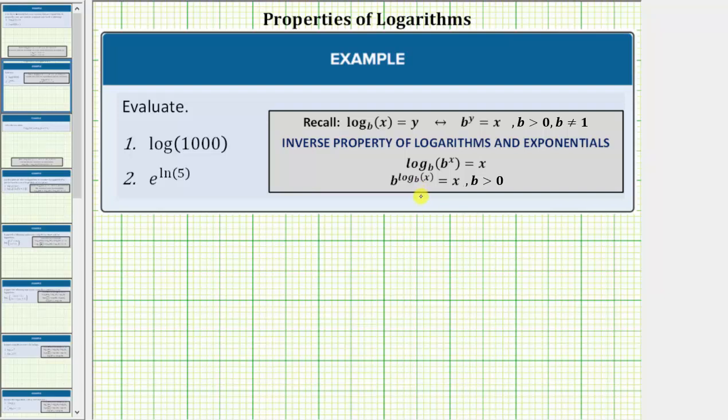Both of these properties exist because logarithms and exponentials are inverses of one another and therefore undo each other. First we have log base b of b raised to the power of x equals x, and b raised to the power of log base b of x also equals x. Notice in both cases, the base of the exponential is b and the base of the log is also b.